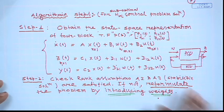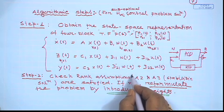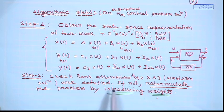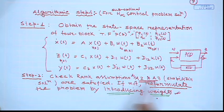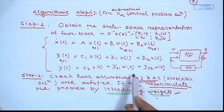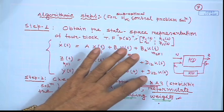This is the four-block representation P(s) with two inputs w and u and two outputs z and y, with controller K(s) connected in the lower loop. Step 2: Check assumptions A1, A2, A3. If A2 and A3 are not satisfied, you must modify the system by introducing weighting functions. A1 requires (A, B2) stabilizable and (A, C2) detectable to get a stabilizing controller.